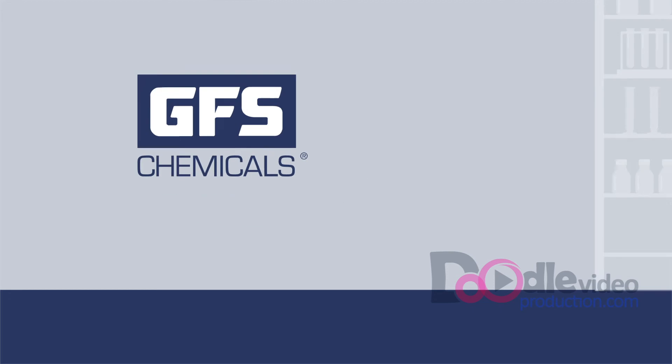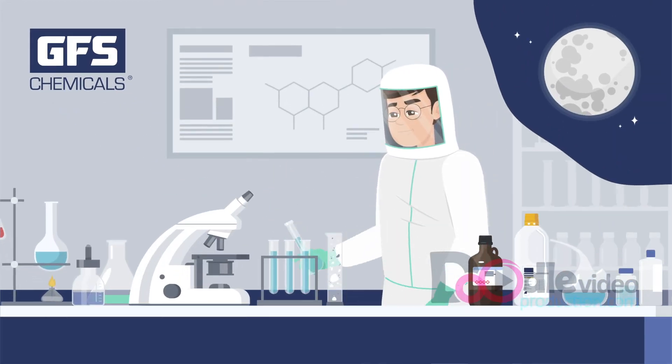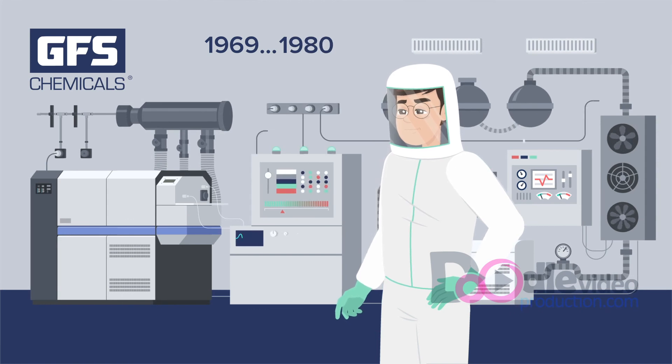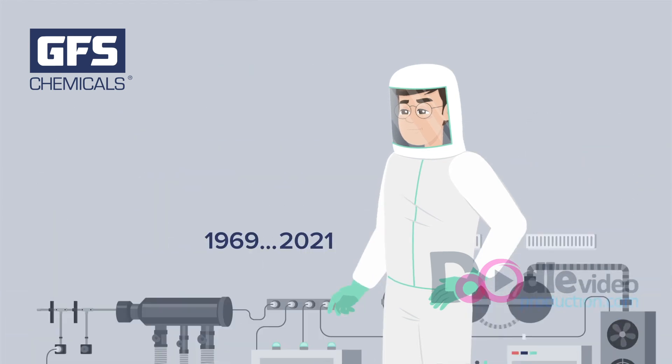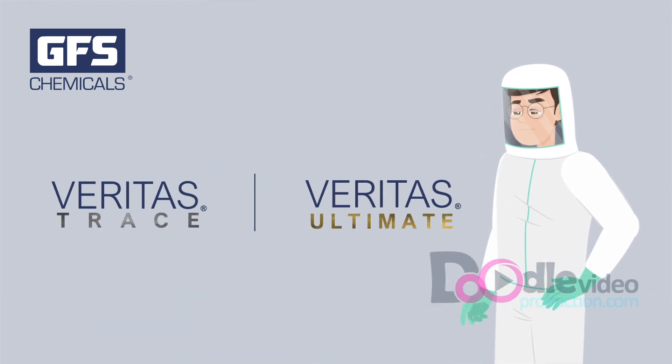GFS Chemicals' high-purity acids were used to digest lunar samples from the first missions to space. Now with over 60 years of high-purity acid expertise and state-of-the-art processes and technology, GFS Chemicals is proud to introduce Veritas Trace and Veritas Ultimate Trace Metal Acids, the ultimate truth in trace elemental analysis.